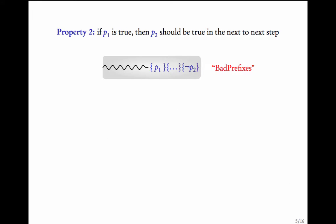Let us look at another example — Property 2, which says that if P1 is true, then P2 should be true in the next-to-next step. What are the bad prefixes for this property? If a word contains P1 and in the next-to-next letter there is no P2, such a pattern would be a bad prefix.